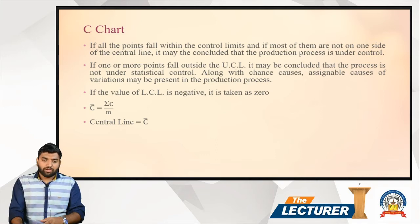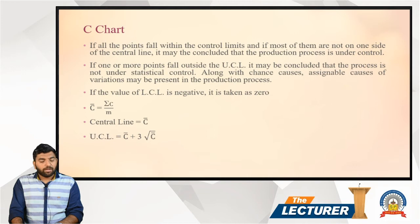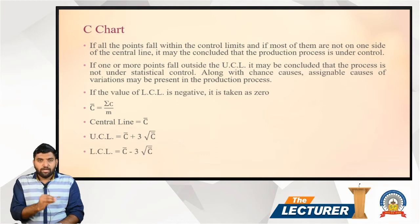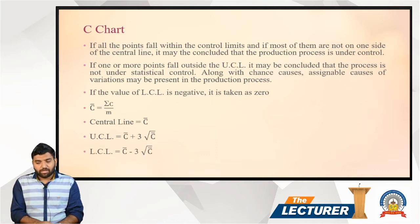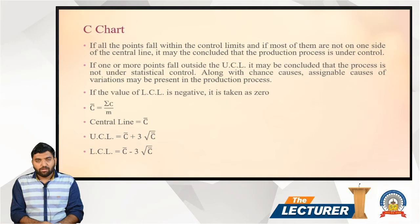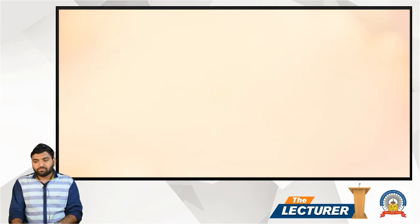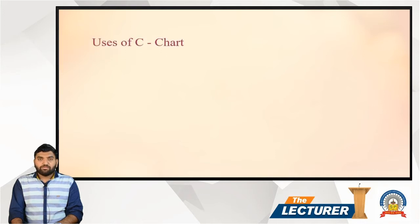Now the formulas for c-chart: c̄ is equal to sigma(c) divided by m. The central line equals c̄. The upper control line is c̄ plus 3 times the square root of c̄. The lower control line is c̄ minus 3 times the square root of c̄.